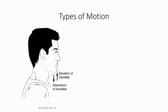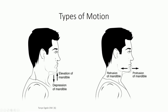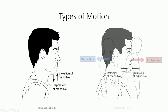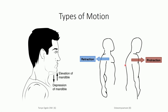Some final pairs of terms to be aware of. Elevation and depression refer to the superior and inferior shift of a bone segment, primarily used in relation to the scapula and mandible. Protraction and retraction involve the anterior and posterior shift of a bone segment — easy to visualize for the mandible, while for the scapula it's more of an anterolateral and posteromedial shift along the circumference of the thorax.